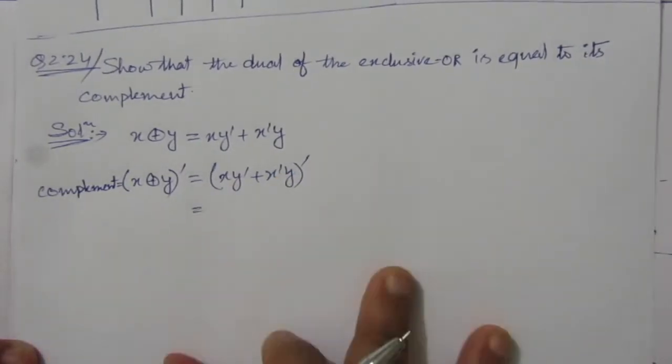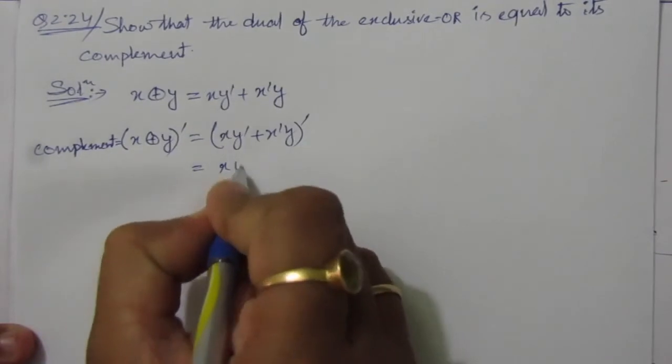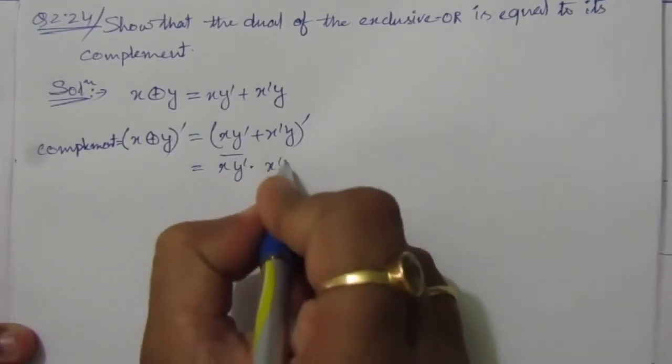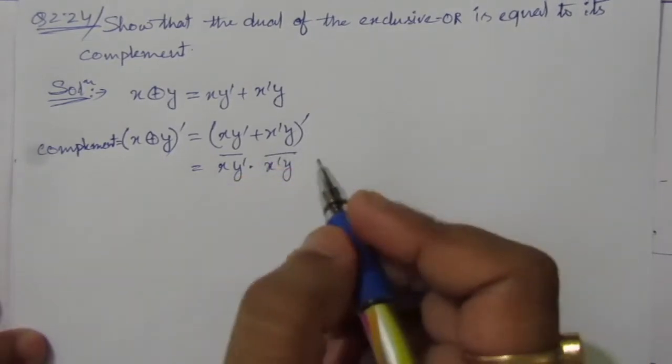Using De Morgan's theorem, we can write it as x y bar whole bar into x bar y whole bar.